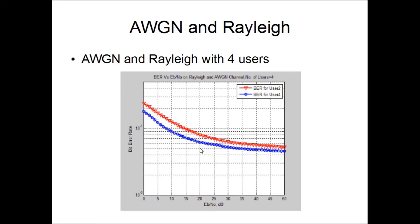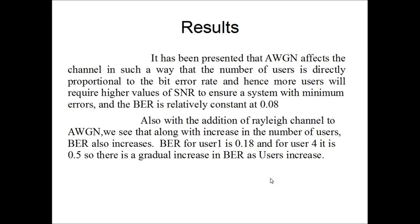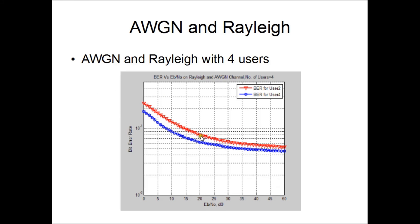Looking over to the 4-user system, it is pretty obvious that the bit error rate and AWGN have changed in a different fashion, which is a gradual increase. As the number of users is increasing, the bit error rate is increasing too.